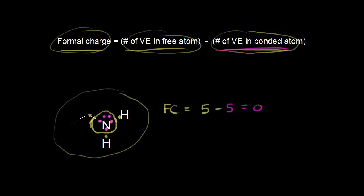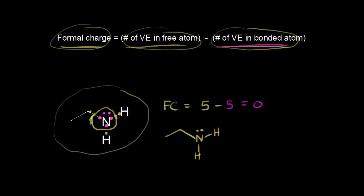So nitrogen has a formal charge of zero. Let me redraw that: nitrogen here with two hydrogens and a lone pair of electrons, and the formal charge is zero. We have a pattern: every time you see nitrogen with three bonds and one lone pair of electrons, the formal charge is equal to zero. So when nitrogen has three bonds and one lone pair of electrons, the formal charge is zero.